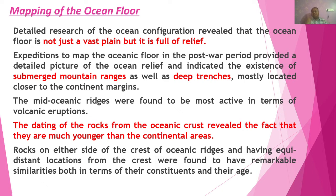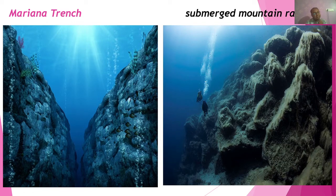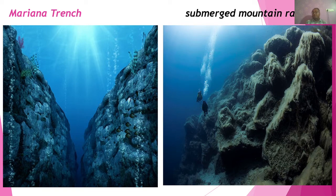That means if you look at rocks from Europe and Africa, and then cross the Atlantic Ocean to North America and South America, the rock evidence will match — just like we studied the jigsaw concept of how the continents match. So mapping of the ocean floor is very important. This is an example of Mariana Trench on the left-hand side, and on the right-hand side you can see submerged mountain ranges — this kind of structure exists inside the ocean.